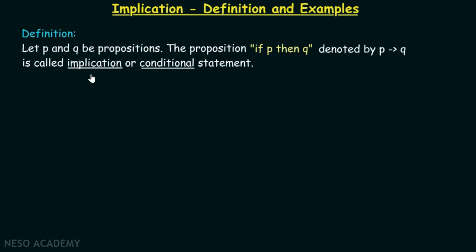Please note down this important point: 'if P then Q' is called a conditional statement. The if-then construct is always a conditional statement. If P is satisfied, then only we would be able to talk about Q. This particular proposition is denoted by P implies Q — this is the symbol we are going to use for implication.